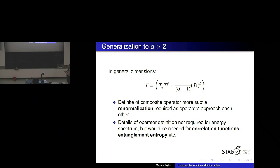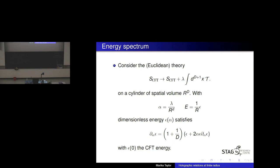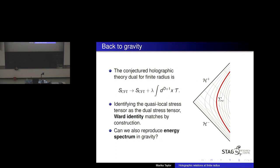One is taking a conformal field theory, deforming by the operator quadratic in the stress tensor, putting the theory on a cylinder of spatial volume R^d, and viewing the dimensionless energy subject to the boundary condition that epsilon at zero is the CFT energy. If our interpretation is correct — that the theory at finite radius holographically is described by this theory — we should be able to reproduce this energy relation. Our conjecture is that the theory inside the region is characterized by this theory with the parameter lambda matching the radius of the surface. Identifying the quasi-local stress tensor with the dual stress tensor, the Ward identity matches by construction.